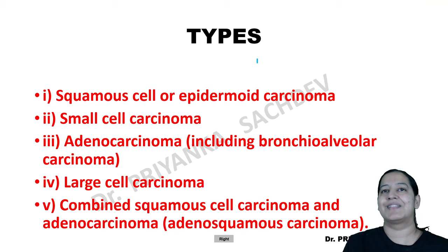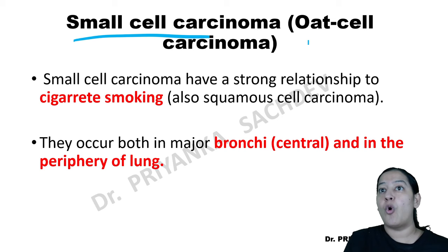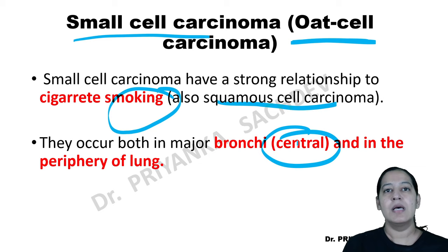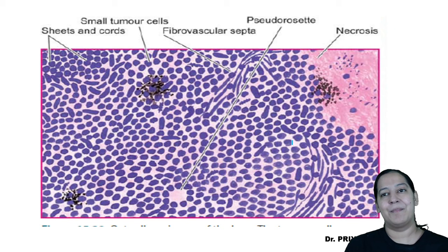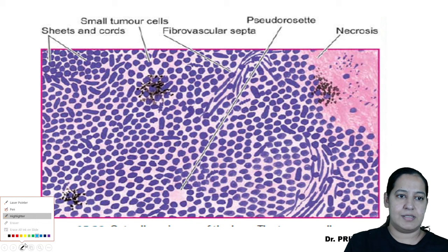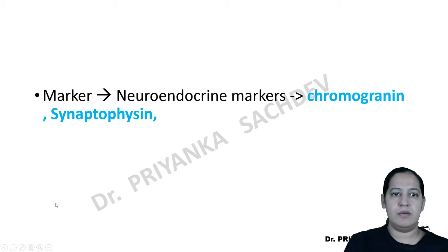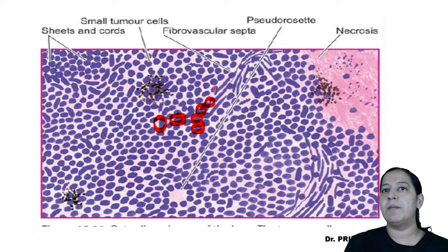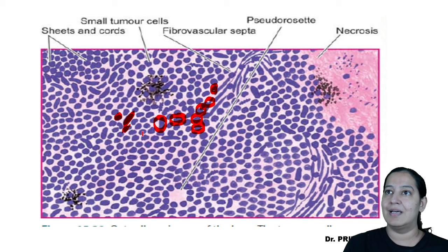Third type: small cell carcinoma, also known as oat cell carcinoma. Like squamous, it is associated with smoking and is central in location. Histologically, tumor cells are small like lymphocytes, blue with a blue nucleus. Cell borders are indistinct, cytoplasm is scanty, and the nucleus is small and circular. Necrosis is very prominent.